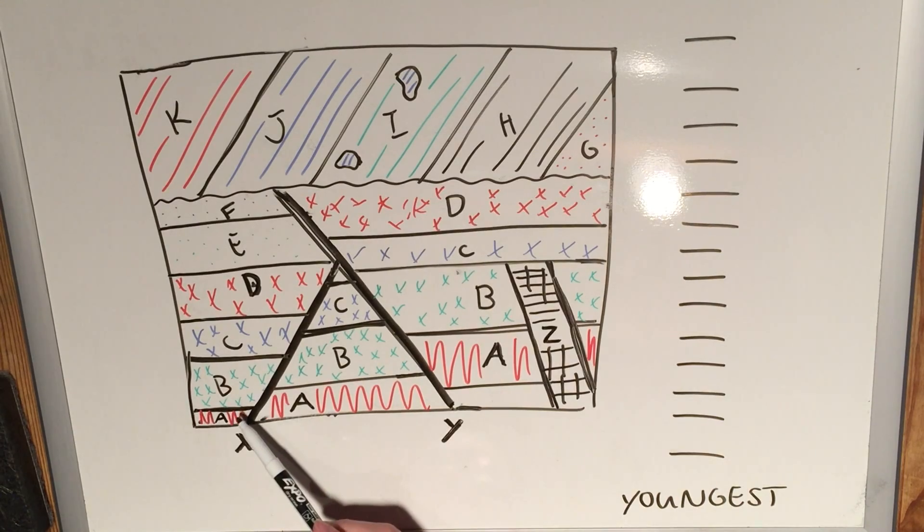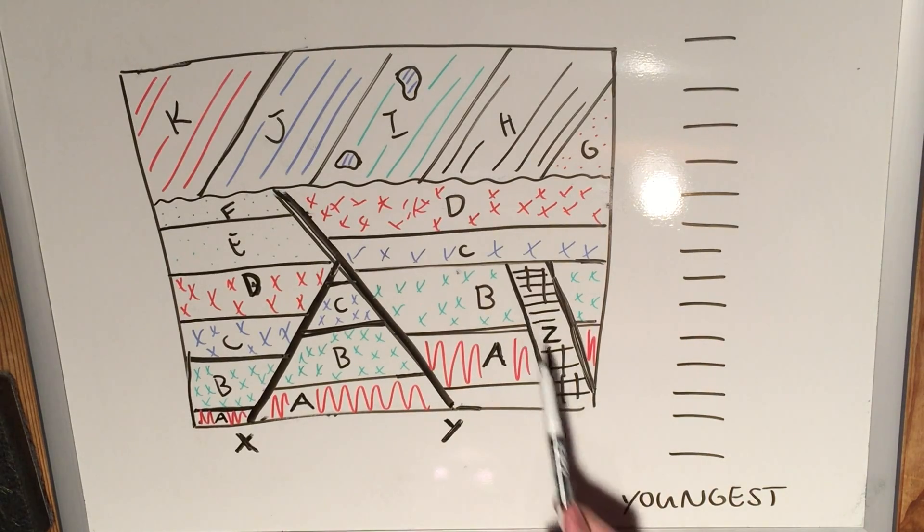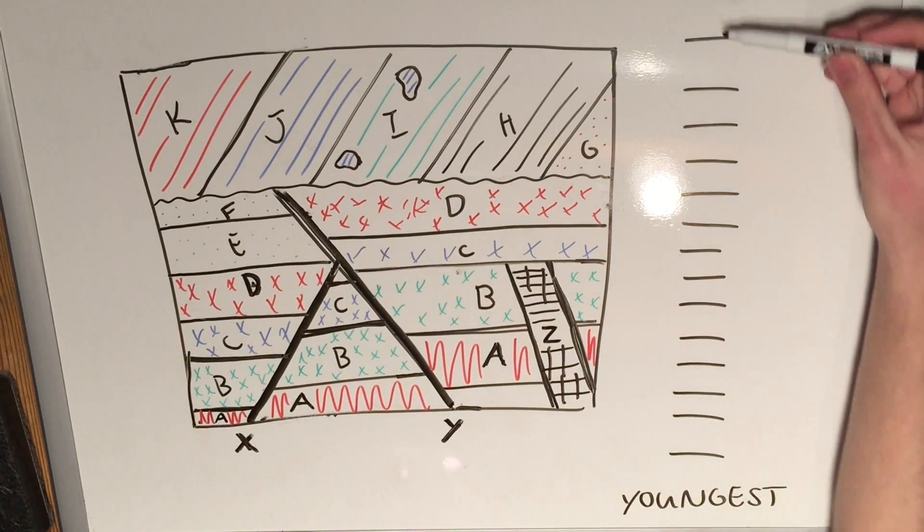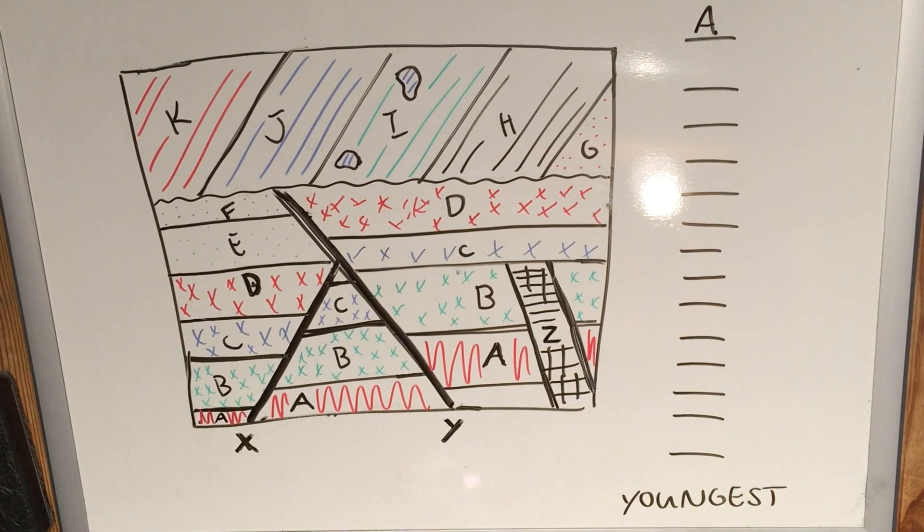There's been no folding that has occurred. There has been faulting, but A is still below B in all cases. A is also near Z, but Z cuts through A, so therefore A must be the oldest. Obviously, you should be able to run through those checks very quickly in your brain. I'm just saying all the criteria to make it incredibly clear why we can definitively say A must be the oldest.